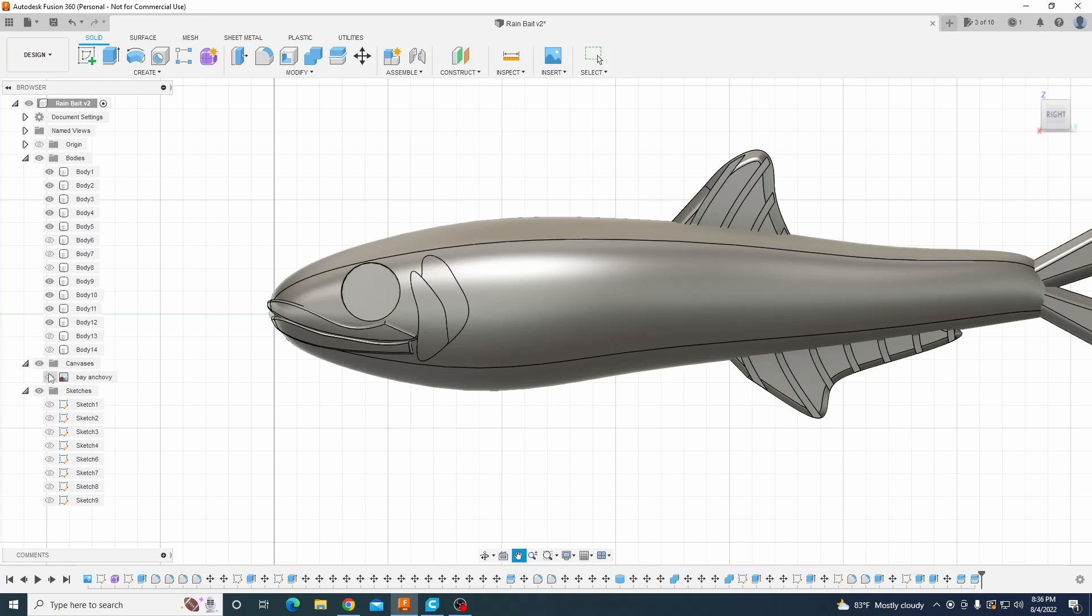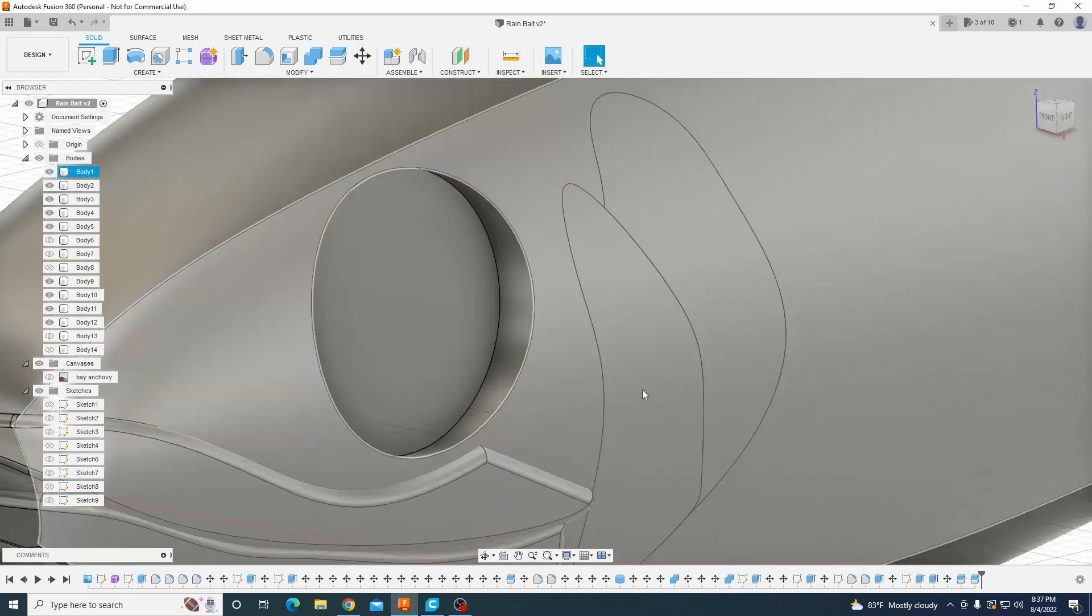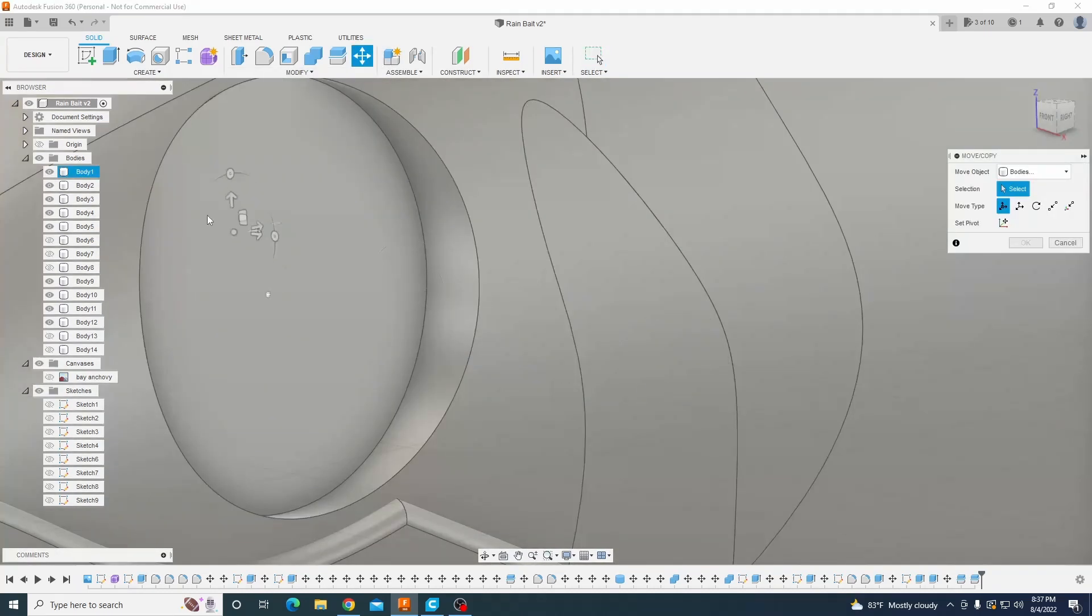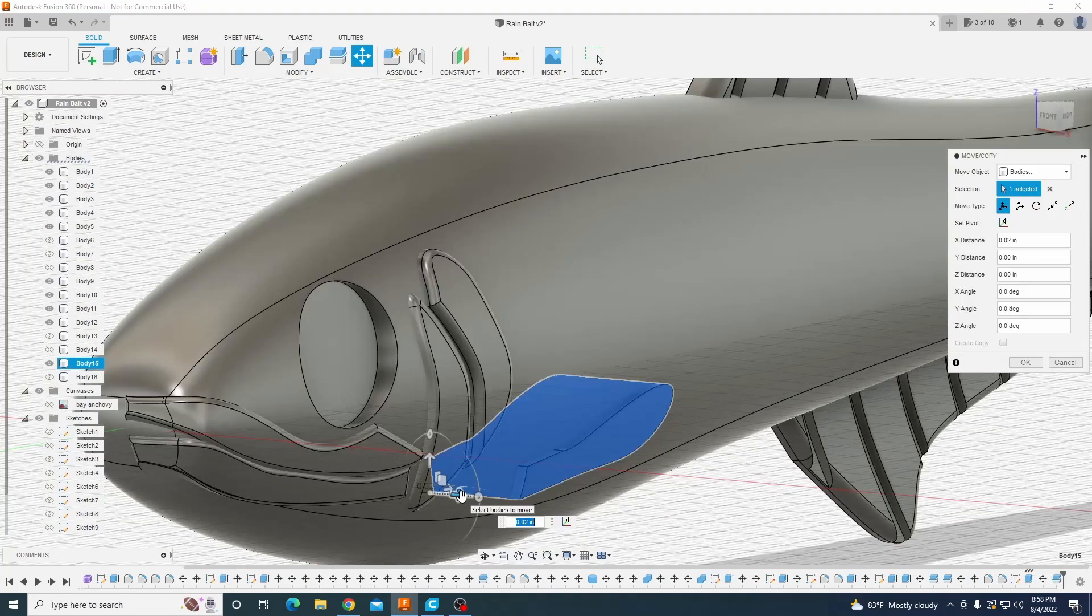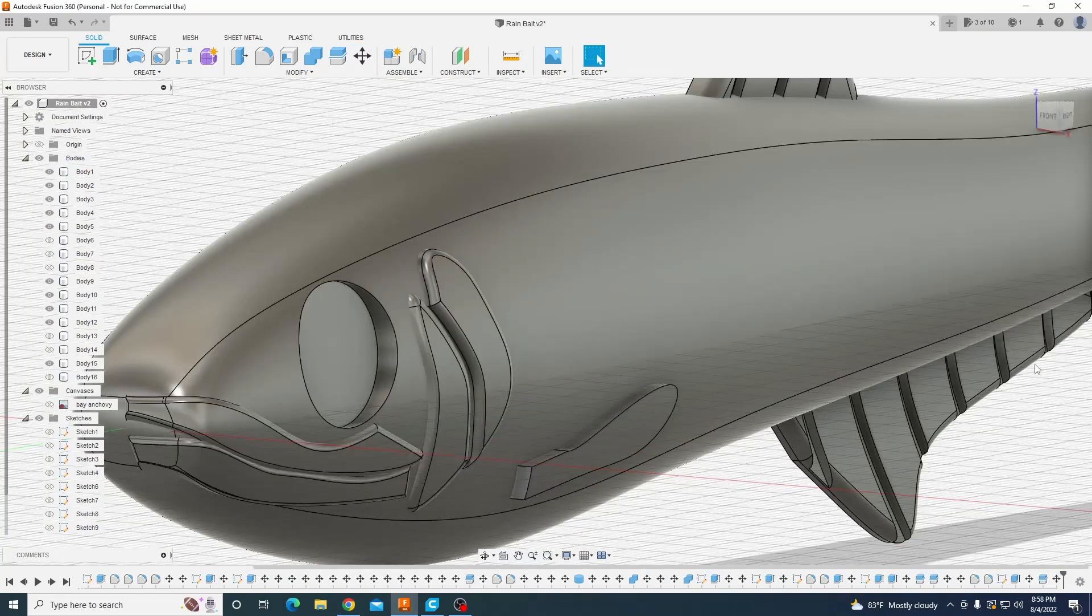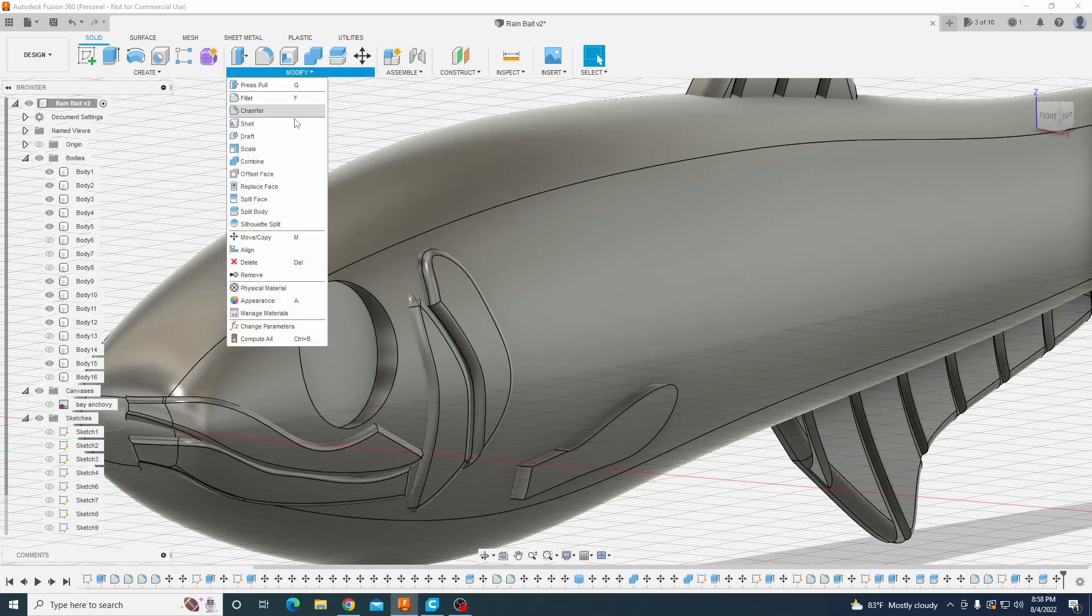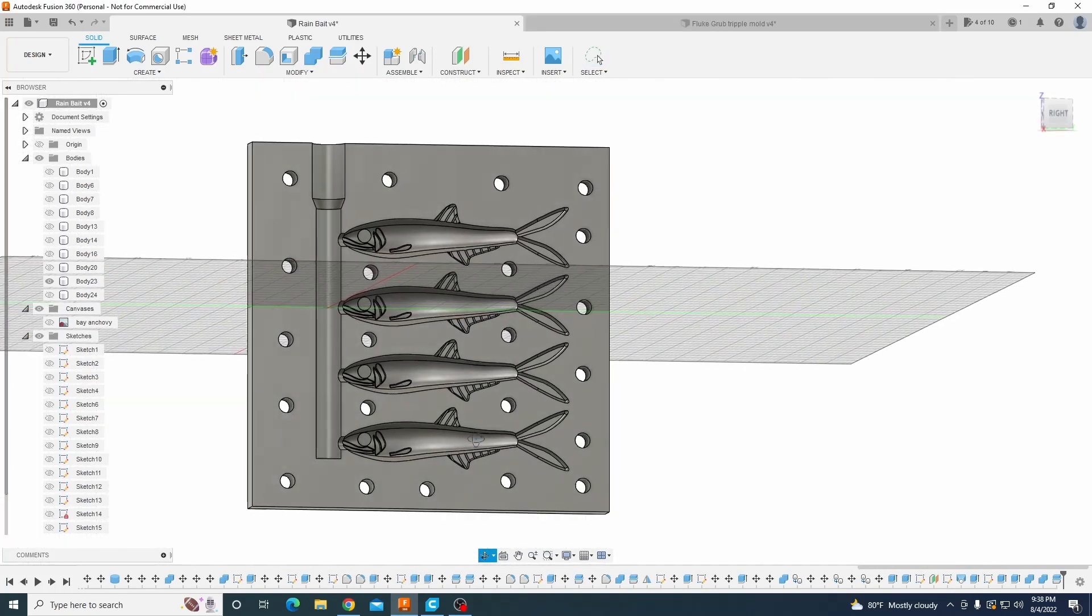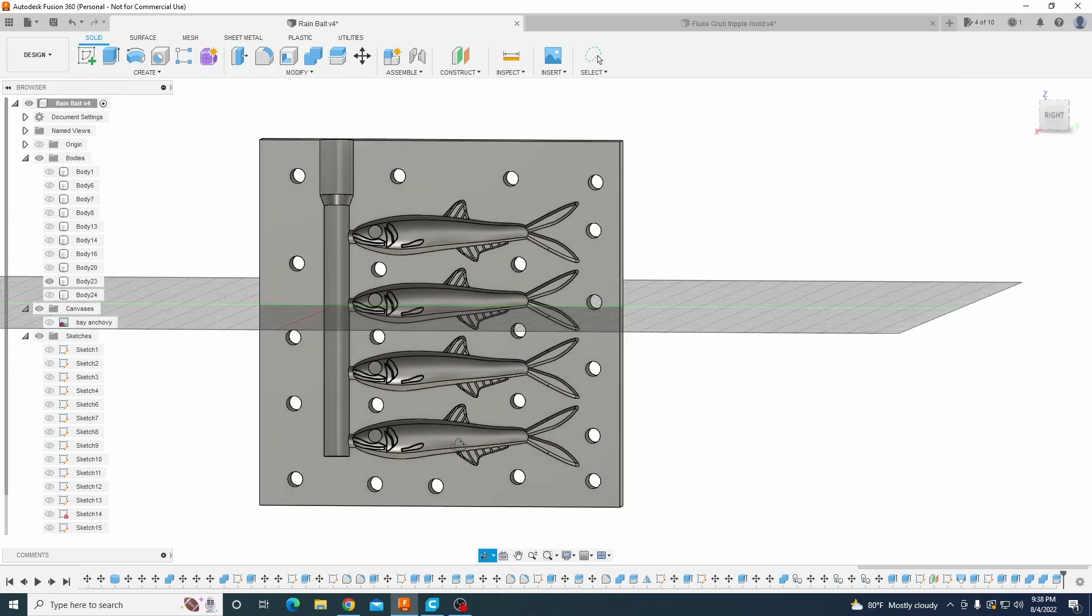So I modeled this out on Fusion 360 and then I printed this on my Anycubic Photon Mono X using Soriatex felt clear resin. This mold is made so you guys can also print it on an FDM printer if that's what you have available. You guys can download this mold for free in the description below and then we're going to go inject this bad boy.